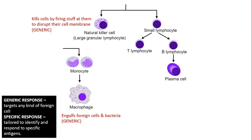The natural killer cell moves around, and anything that's foreign — there's a really good video I'll link to that shows this process — it kills cells by firing toxins at them that disrupt their cell membrane, and then they die because their cell membrane is letting everything in and out and they can't survive that. So natural killer cells and macrophages are both part of our generic response to anything foreign that enters our bloodstream.